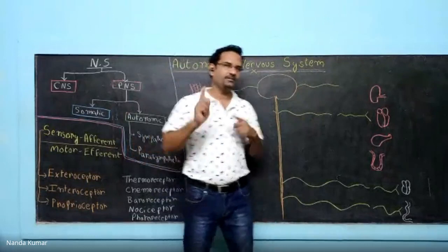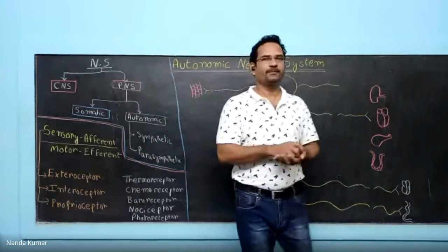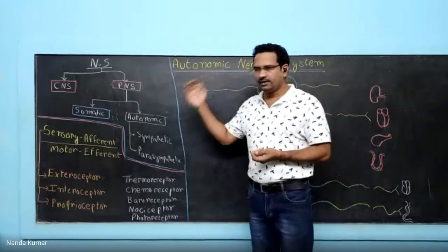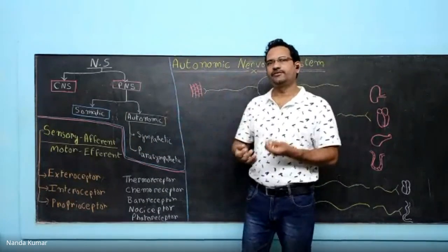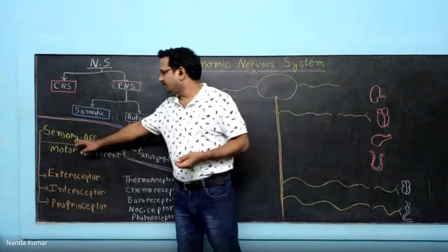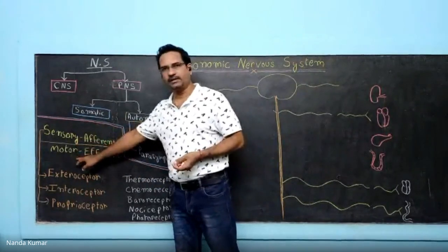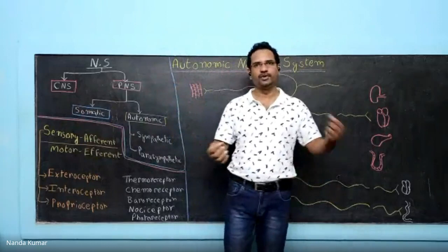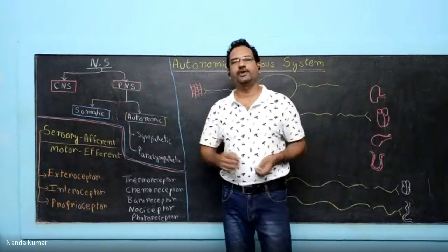Central nervous system, peripheral nervous system. Now, the nerves, according to their function, are classed as sensory or motor — sensory neurons or motor neurons.